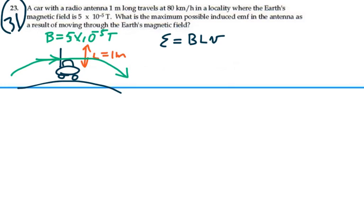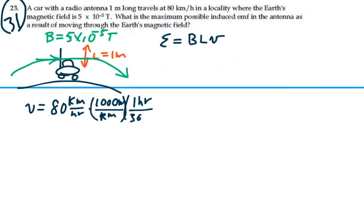We need to have the velocity in terms of meters per second. So if our velocity is 80 kilometers per hour, we need to convert that. There's a thousand meters per kilometer, and there is one hour in 3600 seconds.